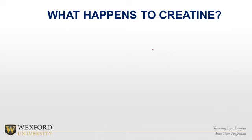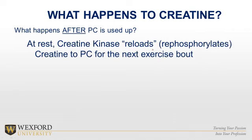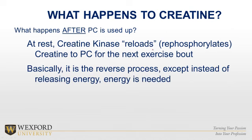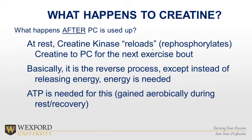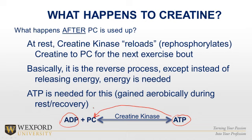What happens to creatine after it gives up its phosphate? At rest, that same enzyme — creatine kinase — reloads it, rephosphorylating creatine back to phosphocreatine for the next exercise bout. Enzymes work in both directions. The reverse process requires energy from ATP, gained aerobically during rest and recovery. If there's lots of ATP in the cell at rest, creatine kinase fills up all creatine to make phosphocreatine. If there's lots of ADP and little ATP, phosphocreatine passes its phosphate over to make new ATP.